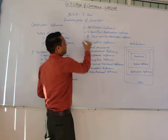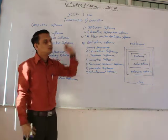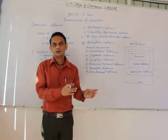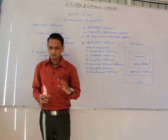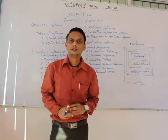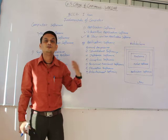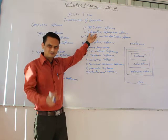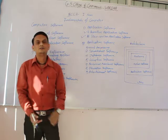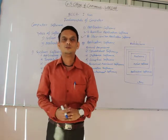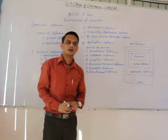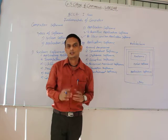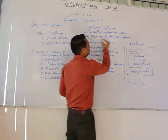We have two types of application software: pre-written application software and user-written application software. Pre-written application software are general-purpose software, meaning every time they are installed on any computer they work the same way and serve a general purpose. User-written application software is developed depending on the demand of the user — based on the need of the user, a programmer develops the application software.